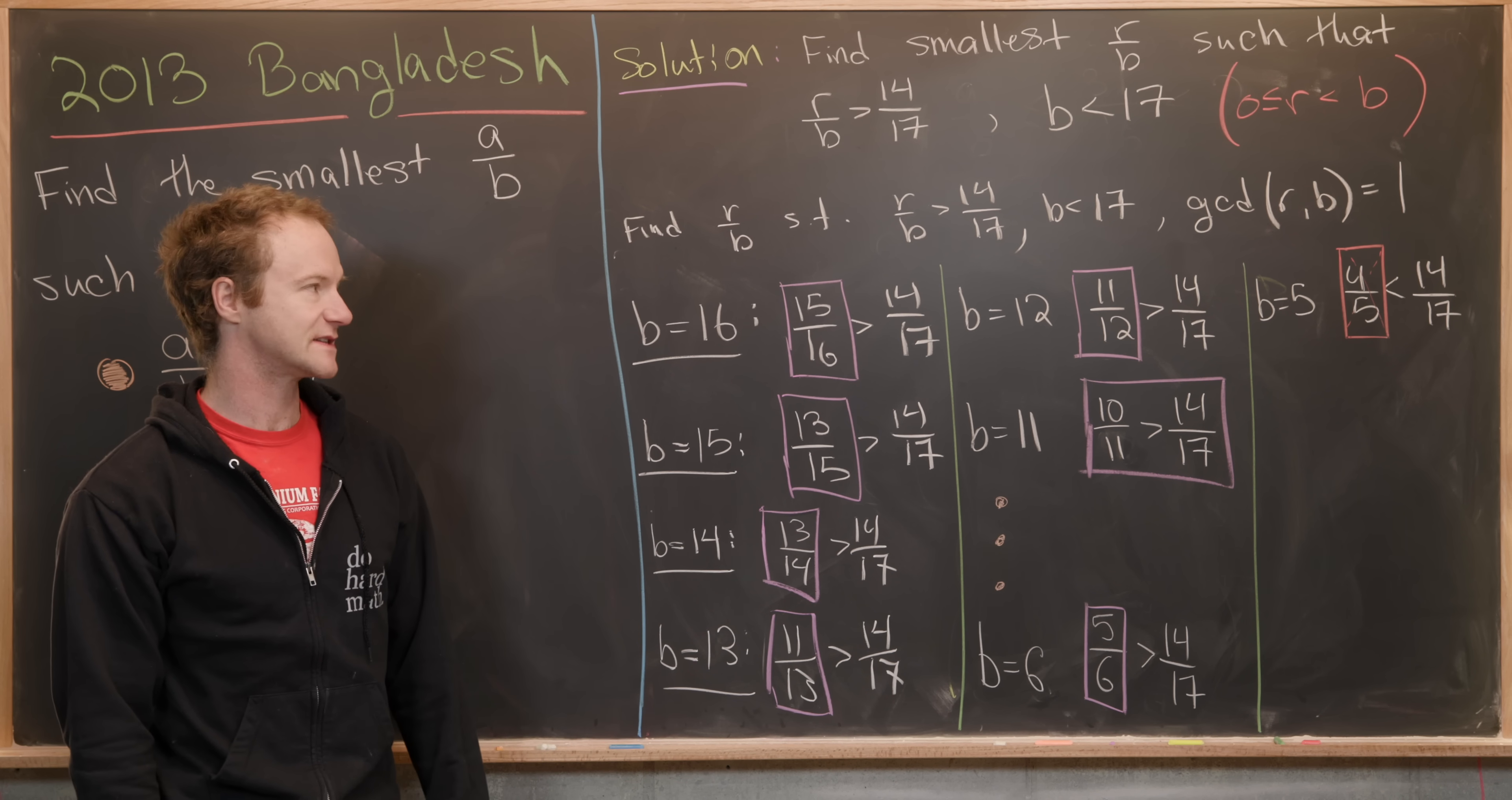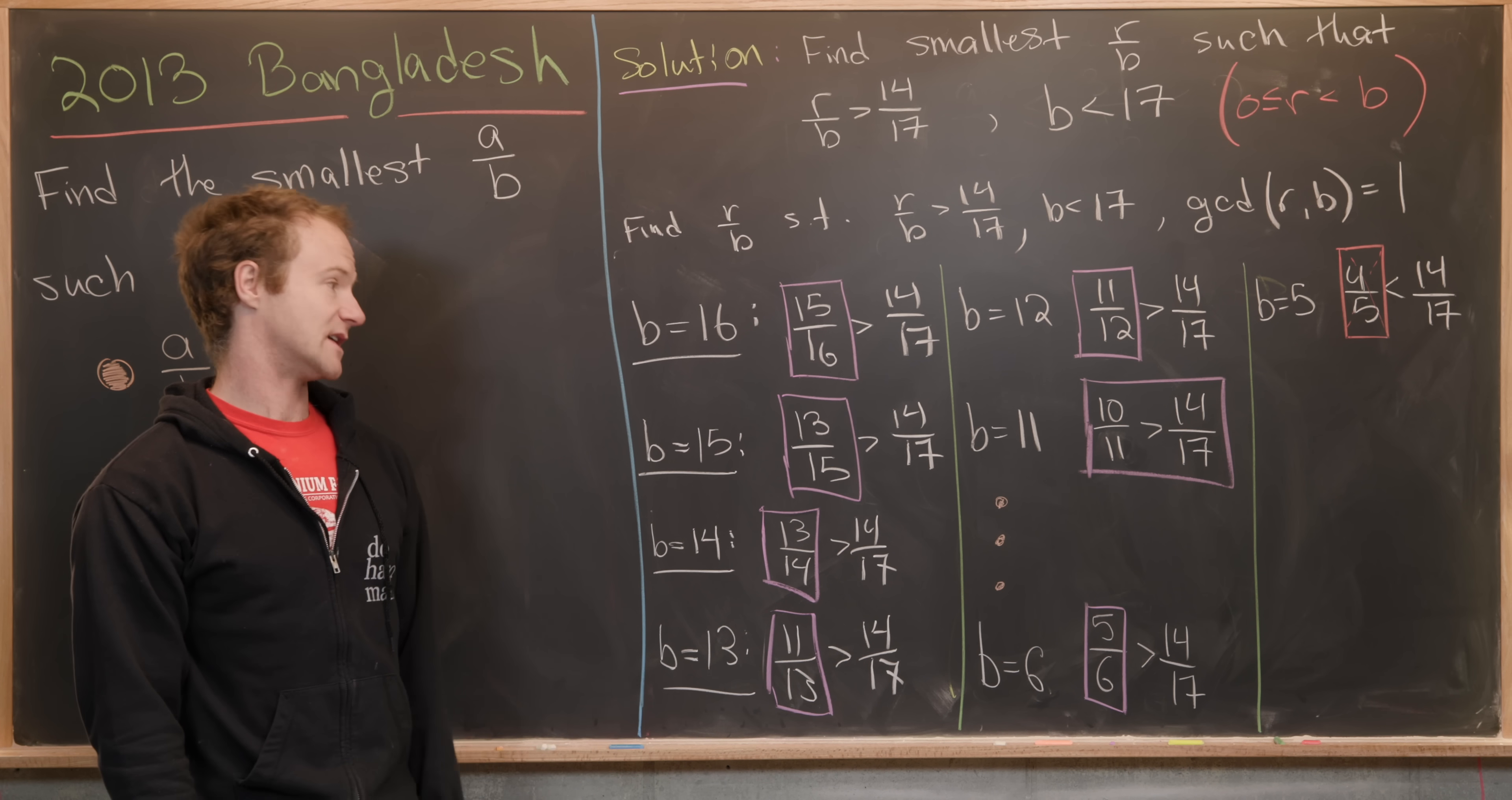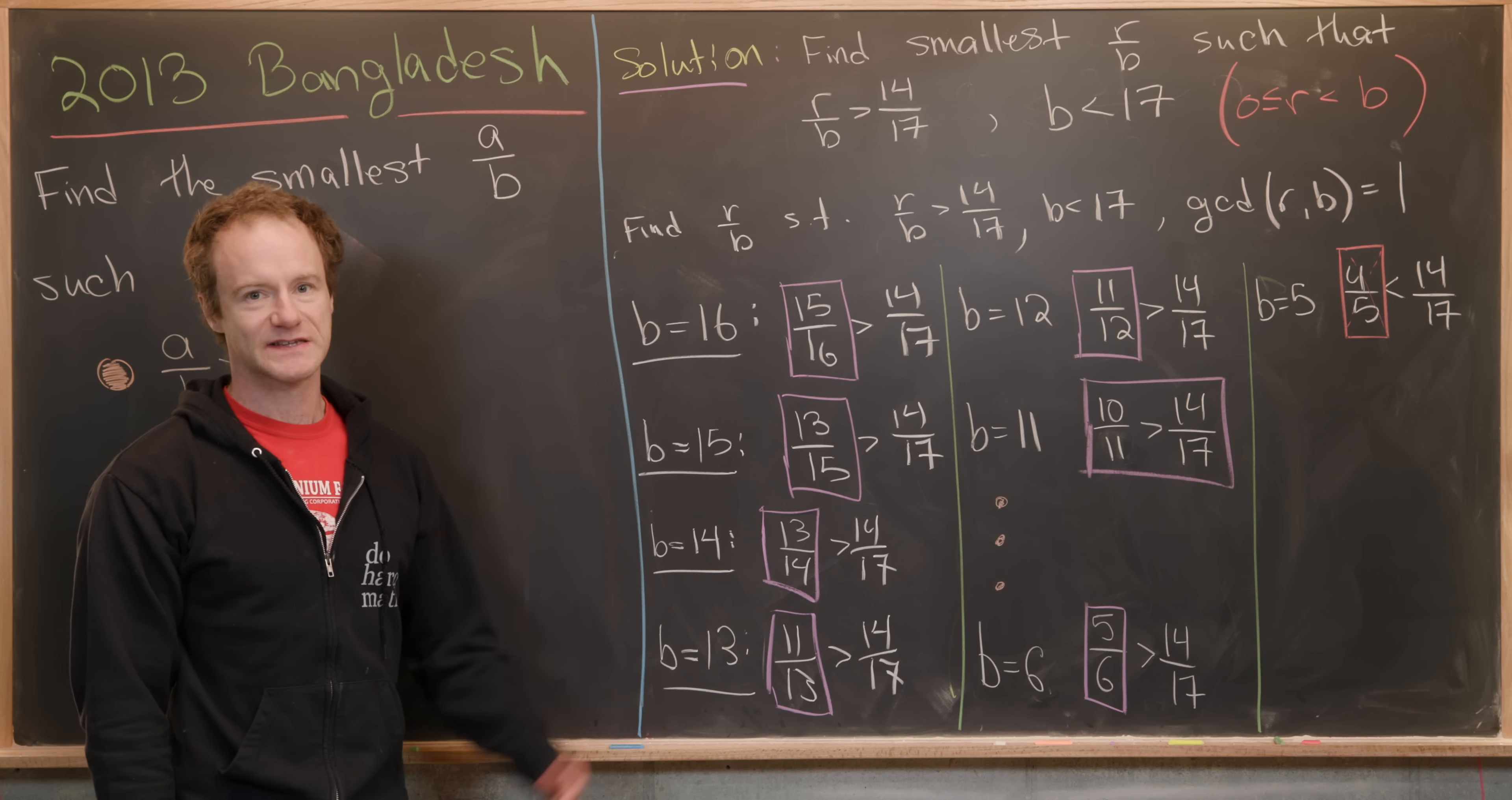We've only got to check the relatively prime numerators because we can just reduce that fraction. Next for B equals 11, 10 over 11 is bigger than 14 over 17, but nine over 11 is not. That tells us we only need to look at the numerator one less than the denominator for the rest of this game.